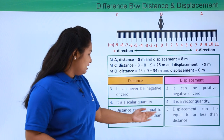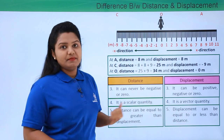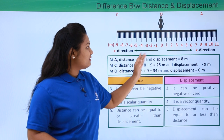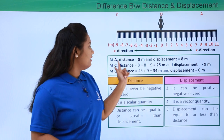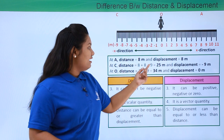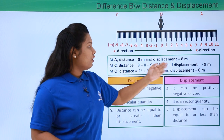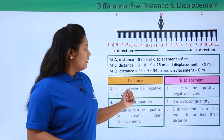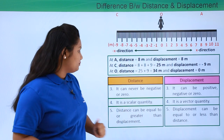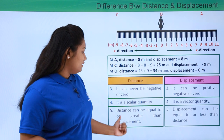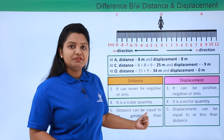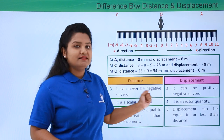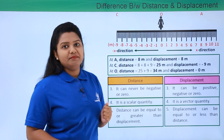Distance can be equal to or greater than displacement. We can notice here that distance is either equal to displacement, as at point A, or in the other two cases it is greater than displacement. So displacement can be equal to or less than distance. Both points mean the same thing.